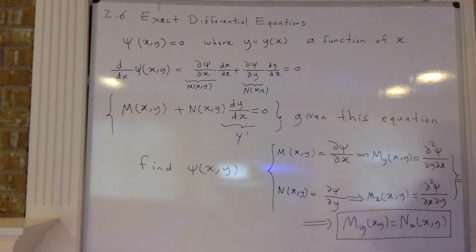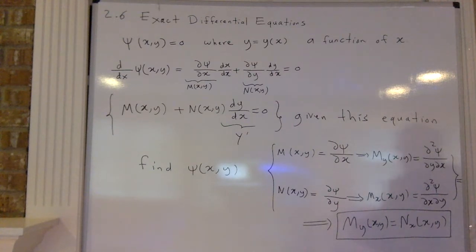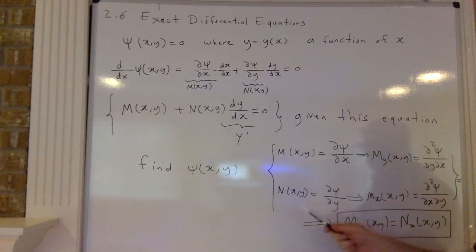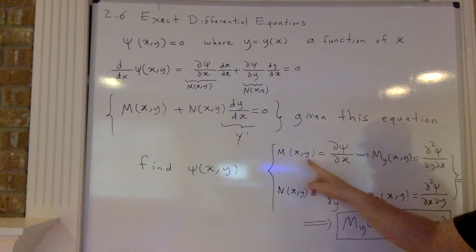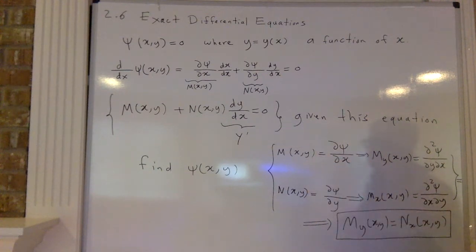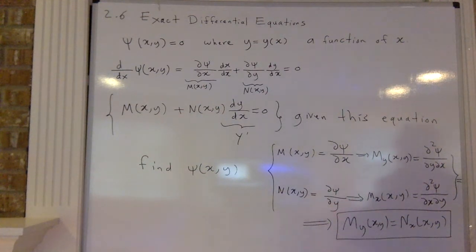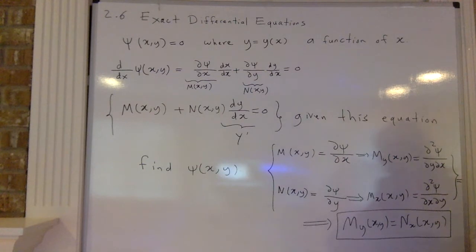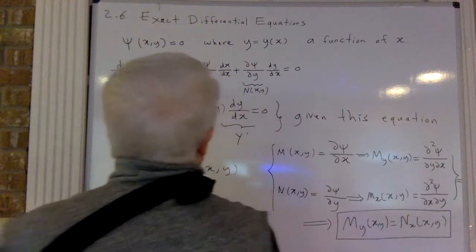So if M_y = N_x, we say that we have an exact differential equation and we solve it. Solving it is not that hard; I will do it by giving you some examples. You are given dc/dx = M and dc/dy = N — two equations. You integrate one with respect to x, then substitute it into the second equation and find the constants.